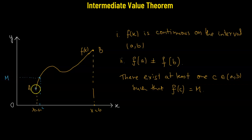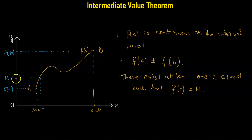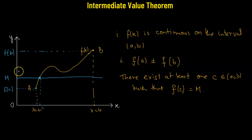The point corresponding to A gives us f of A, and this will be f of B. So the intermediate value theorem is saying that a continuous function given by f of x is going to take all the values between f of A and f of B. So that means any point — in our case, we have considered the point M. So if we draw a straight line, it is going to hit the curve at at least one point. That is all we are saying.